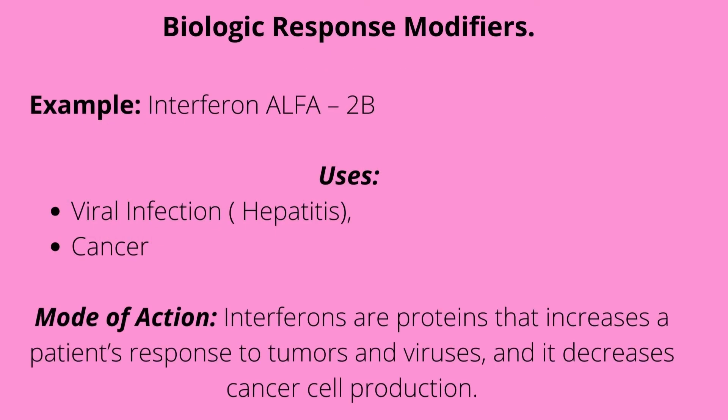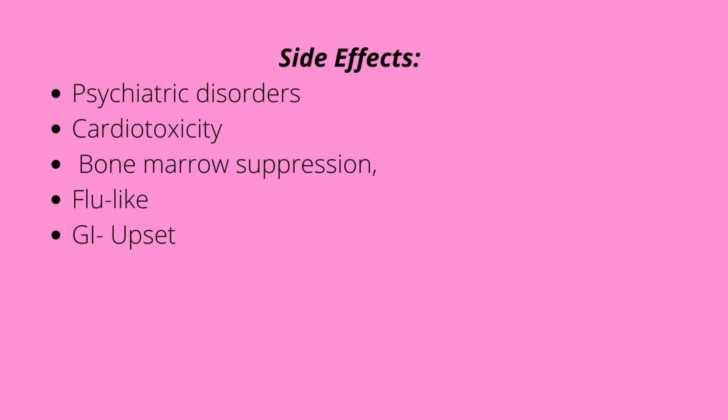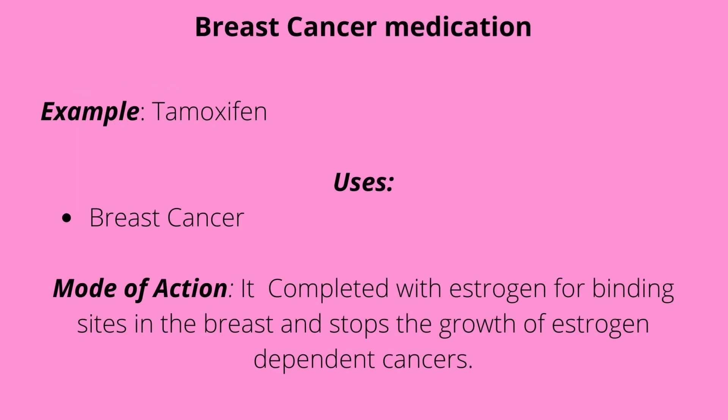Biologic response modifiers — interferon alpha-2b is used for viral infections like hepatitis as well as cancers. Its mode of action: interferons are proteins that increase the patient's immune response to tumors and viruses and decrease cancer cell production. Side effects include psychiatric disorders, cardiotoxicity, bone marrow suppression, flu-like symptoms such as fever, chills, muscle aches, lethargy, and GI upset.